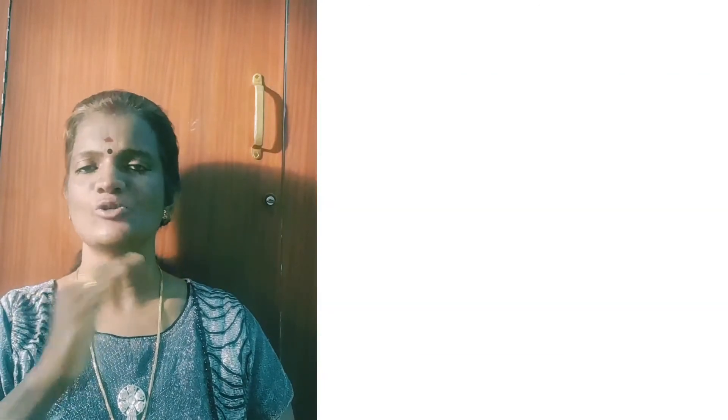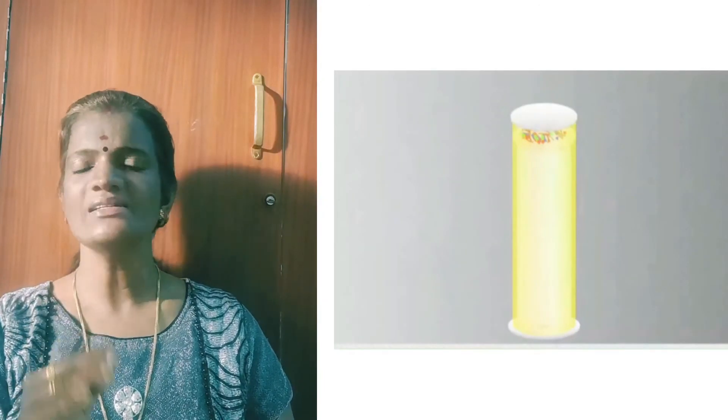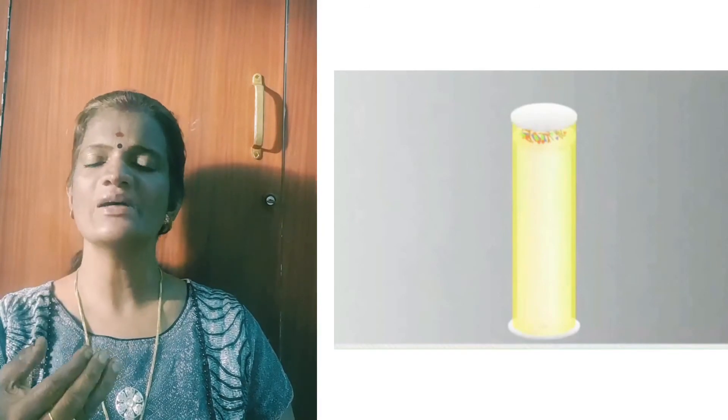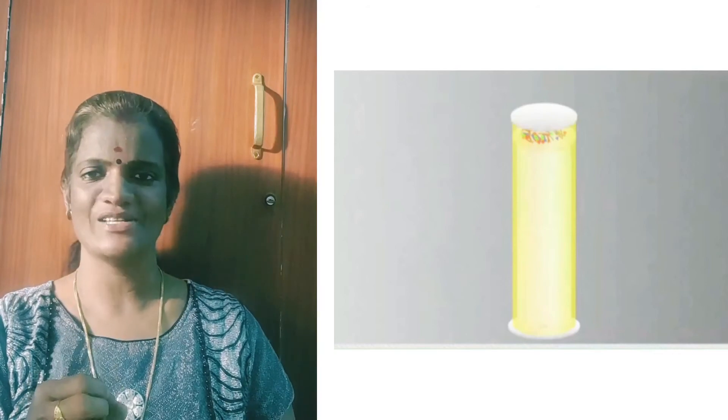Then cover this tube by a ground glass plate. Then our kaleidoscope is ready. You can also wrap this tube with colored paper so as to make it more attractive.